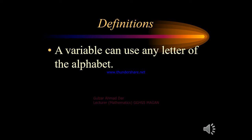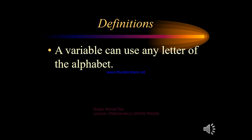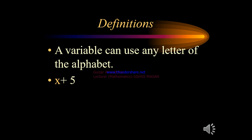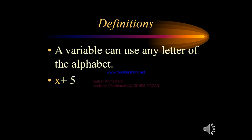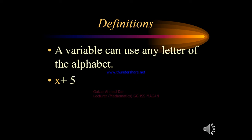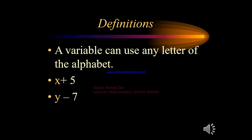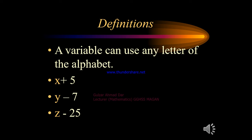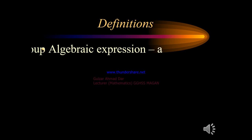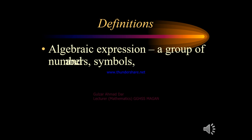A variable can use any letter of the alphabet from A to Z, but generally we use x, y, z, and letters like l, m, n, o, p, q, r, s, t, u, v, w, x, y, z to represent variables. For example, in x plus 5, x is a variable; in y minus 7, y is a variable; and in z minus 25, z is a variable. Now let's define algebraic expression.